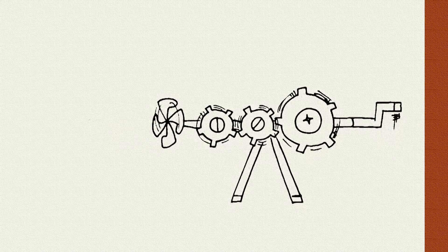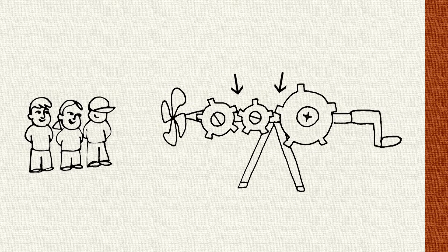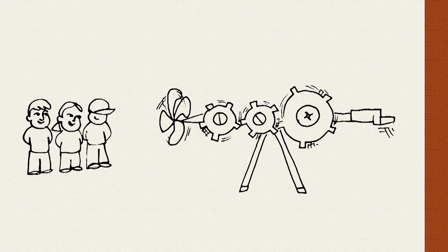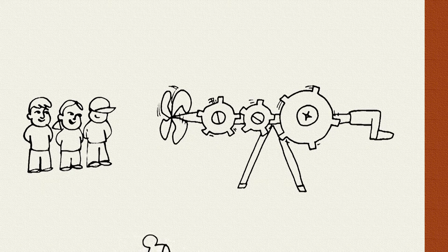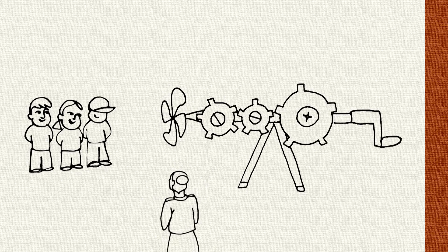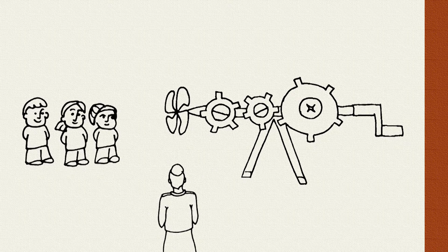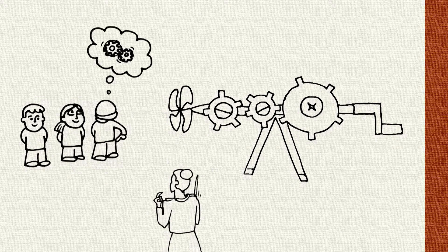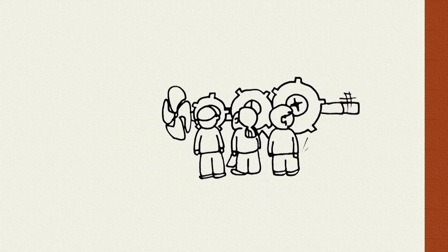And so the way we do this experimentally is we show children, we demonstrate how the machine works. So we spin the crank, they see the gears interconnecting, and it spins the fan. And what we do experimentally is to manipulate whether we ask children to explain how this works. We simply ask them to watch or observe. We ask them to describe what they see or allow them to actively explore how the machine works.